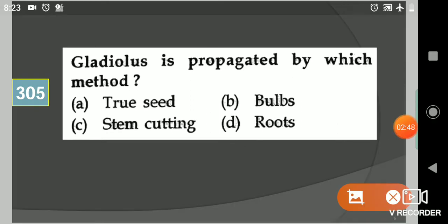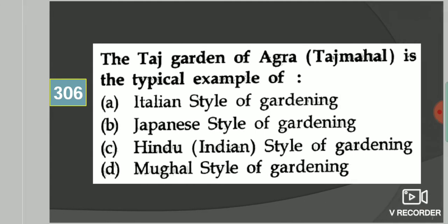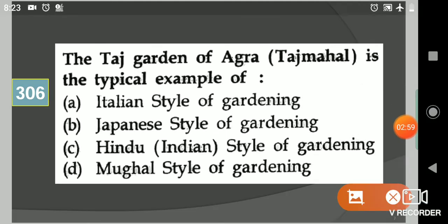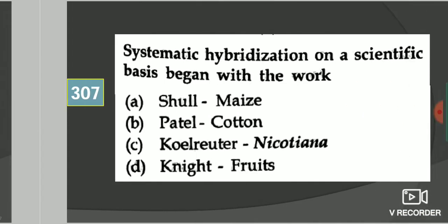Next question: Gladiolus is propagated by which method? Your options are true seed, bulbs, stem cutting, roots. Your answer is bulbs. Next question: The Taj garden of Agra, Taj Mahal, is the typical example of? Your options are Italian style of gardening, Japanese style of gardening, Hindu or Indian style of gardening, Mughal style of gardening. Your answer is option number four, Mughal style of gardening.